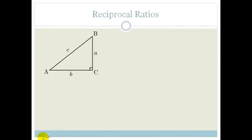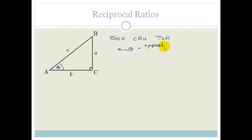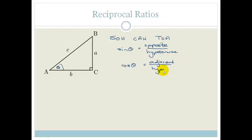First of all, let's go through what are the reciprocal ratios. We have learnt about SOHCAHTOA, where the sine of an angle — let's call it theta — is equal to the opposite side over the hypotenuse. Cos theta is equal to the adjacent over the hypotenuse. And we've got tan theta, which is equal to the opposite over the adjacent.